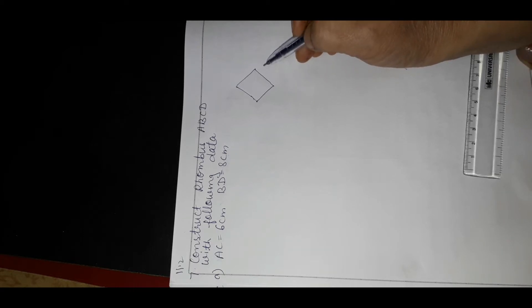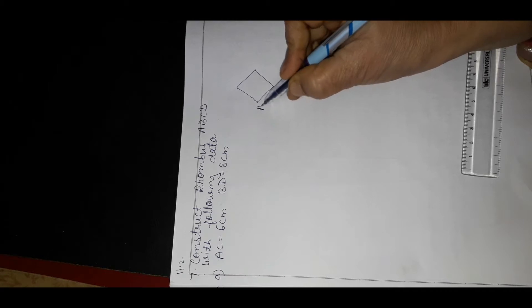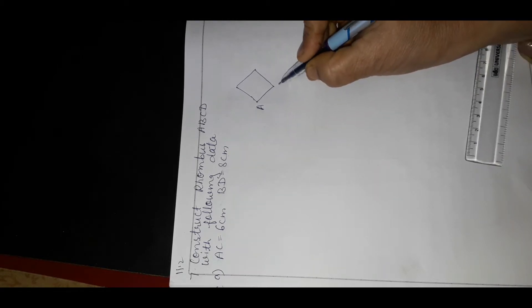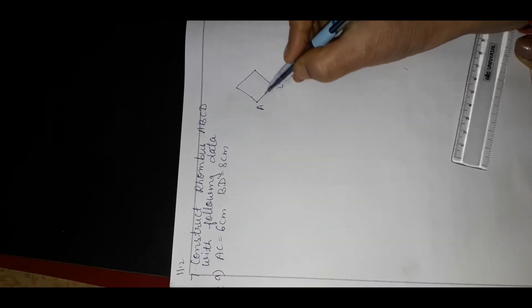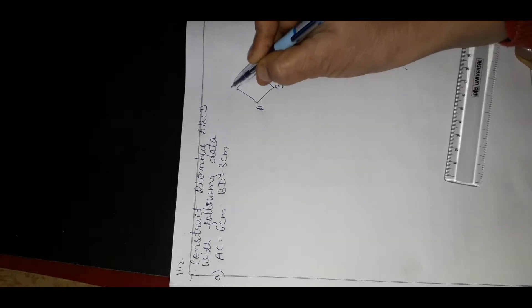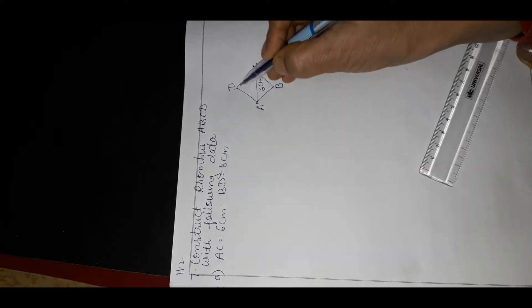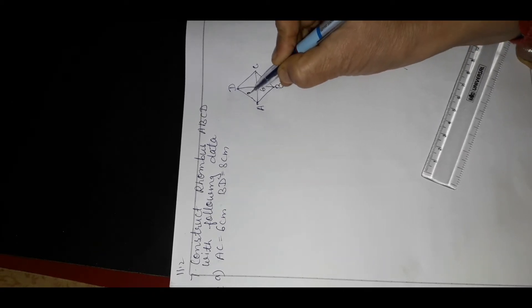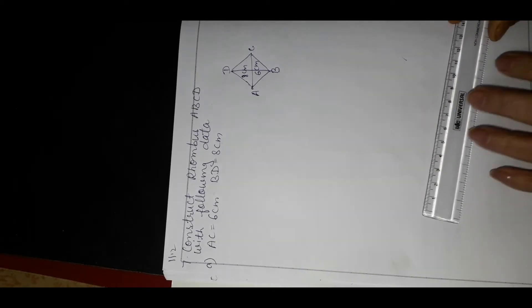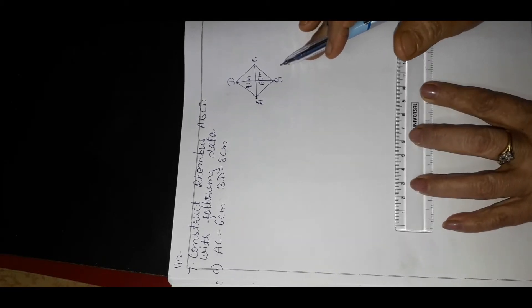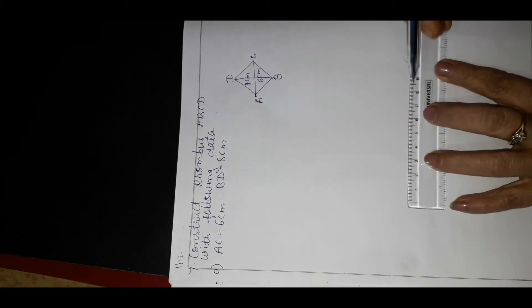The diagonals of a rhombus are not equal, unlike a square. We have a rhombus ABCD with two diagonals given: AC equal to 6 cm and BD equal to 8 cm. Since the two diagonals are different lengths, we proceed by drawing AC = 6 cm first.